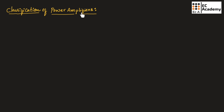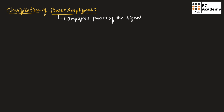Power amplifiers are nothing but amplifiers that amplify the power of the signal. The power amplifier amplifies the power of the signal. Power can be given as P is equal to V into I. So in a power amplifier, the voltage and current will be amplified.